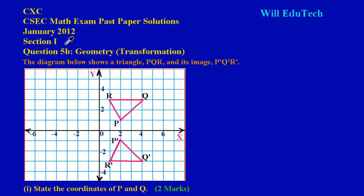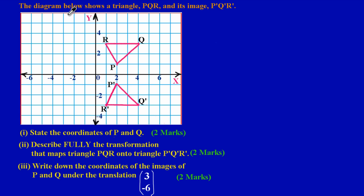It falls in section 1. The question states: the diagram below shows a triangle PQR and its image P prime Q prime R prime, shown here on our Cartesian plane. Another name for the Cartesian plane is your graph leaf. Here we have the object PQR and its corresponding image P prime Q prime R prime.